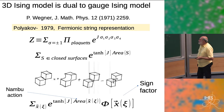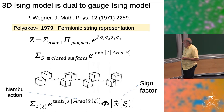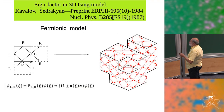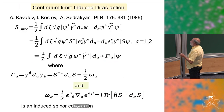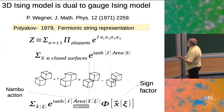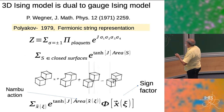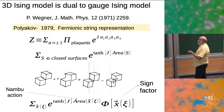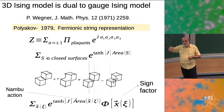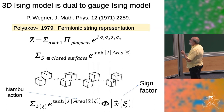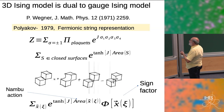Polyakov formulated it as a string theory in a very simple way. This is the action of the gauge version of the Heisenberg model — the product of four spins residing on the links of the plaquettes. If you simply take the sum over all plus/minus spins, you will immediately see that this sum becomes a sum over closed surfaces, with a weight given by tanh(g) to the area of the corresponding surface.